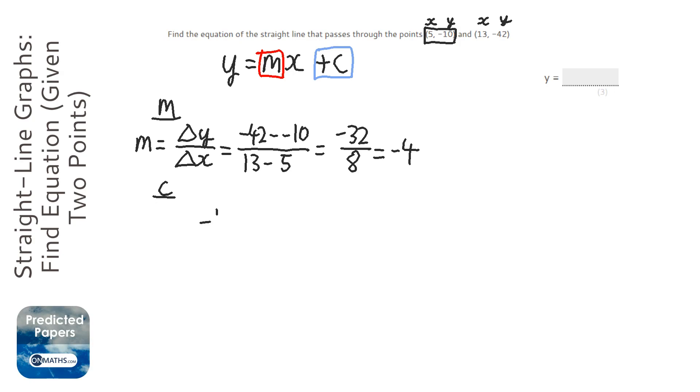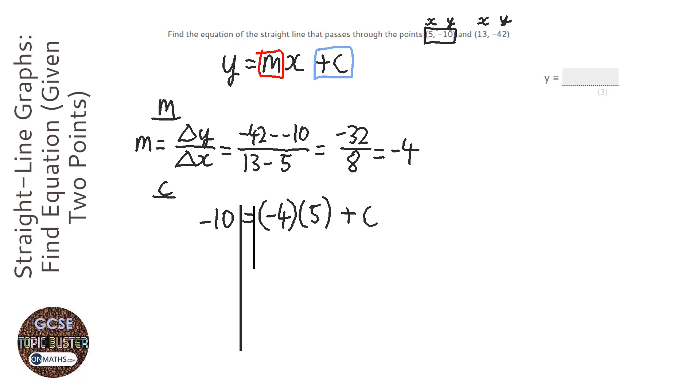It's going to be minus 10 equals, and then we've worked out the gradient, which is minus 4, times the x, which is 5, plus c. Now, c is the one we're trying to find, so we're going to leave that as a c. Minus 10 equals minus 4 times 5 is minus 20, plus c. And we're going to add 20 to both sides.